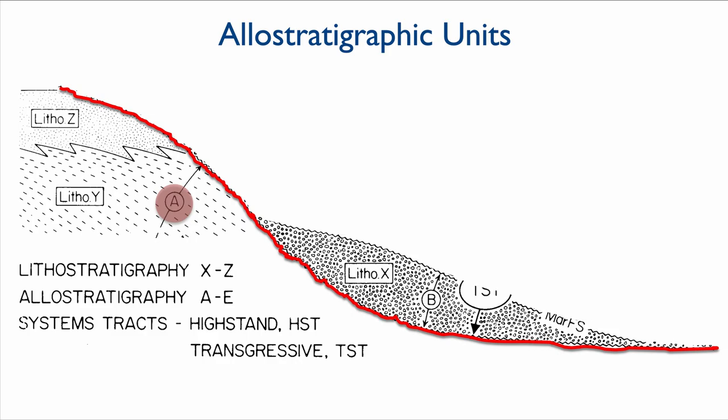Then on top of this, we have the deposition of this gravel-rich package, which we will see in this class represents essentially lowstand deposit. And this itself is bounded by an unconformity. So that becomes our allostratigraphic unit B.